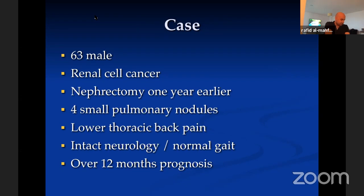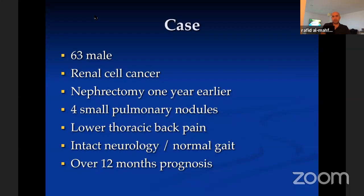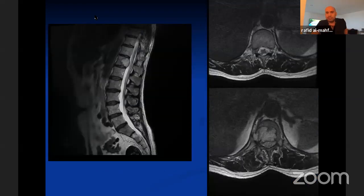Case number one: a 63-year-old gentleman with a history of renal cell cancer who had a nephrectomy a year earlier. When he presented, he had four small pulmonary metastases and came with low thoracic back pain — in a patient with a history of cancer, that's a red flag warranting investigation. He had intact neurology and a normal gait. Discussion with the oncologist gave an opinion of over 12 months prognosis, which is reasonably good for a cancer patient.